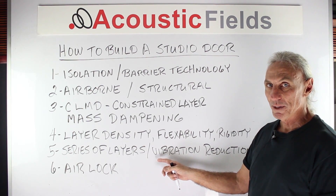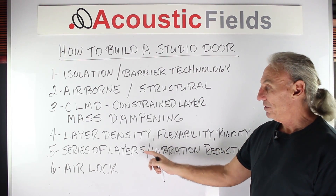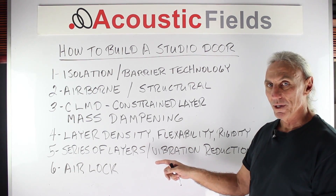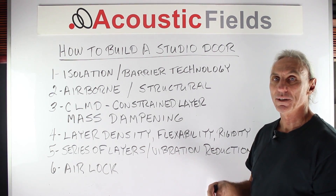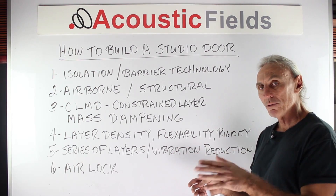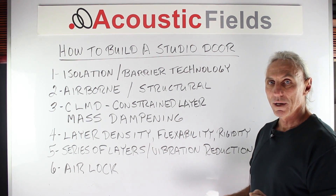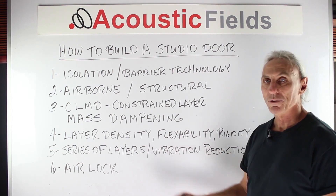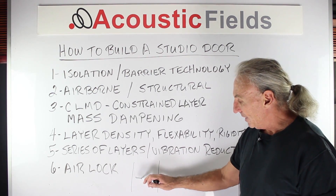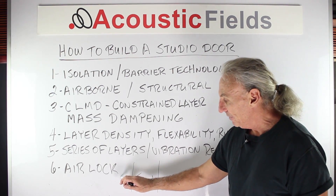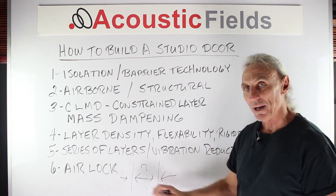We're going to use a bunch of layers of material to control vibration, changing from airborne to vibrational energy using a series of layers. Another way to do it is to create an airlock — like on Star Trek where you go into a little airlock, close one door, and open the other. We can do the same thing in our studios: construct a door, leave some space, then construct another door. The distance between those two doors depends on the level of noise outside and inside the studio.